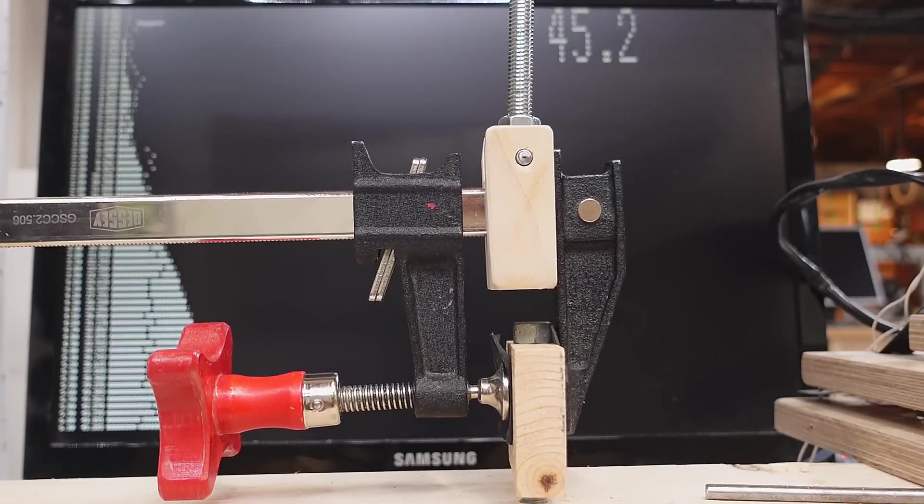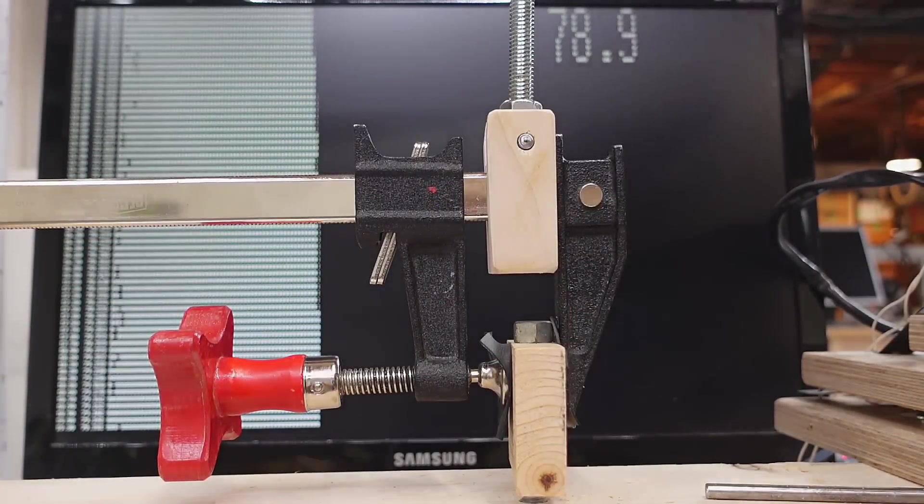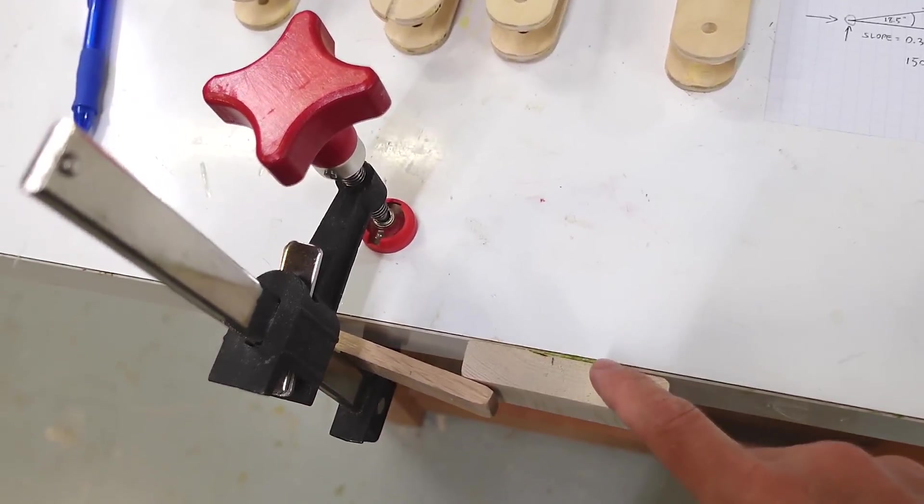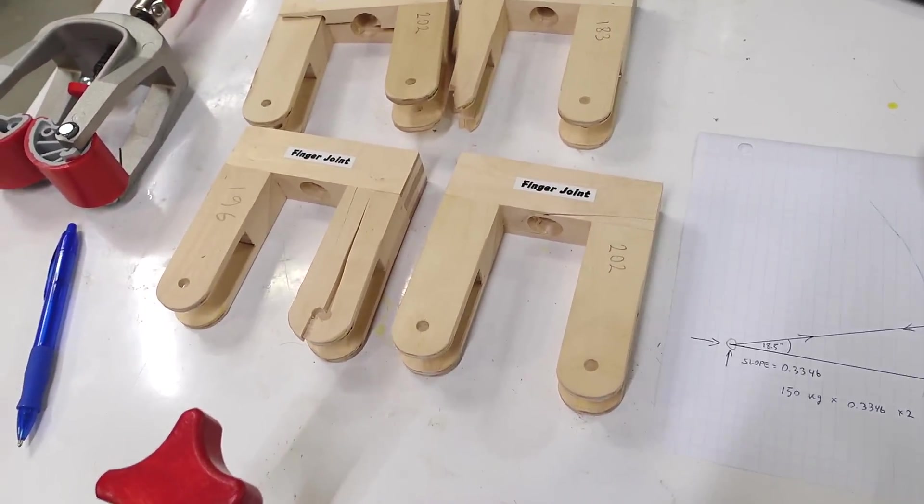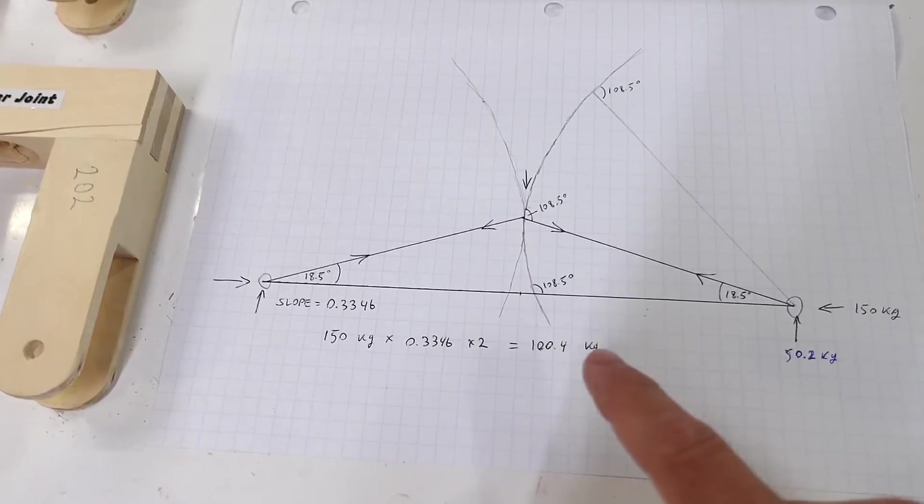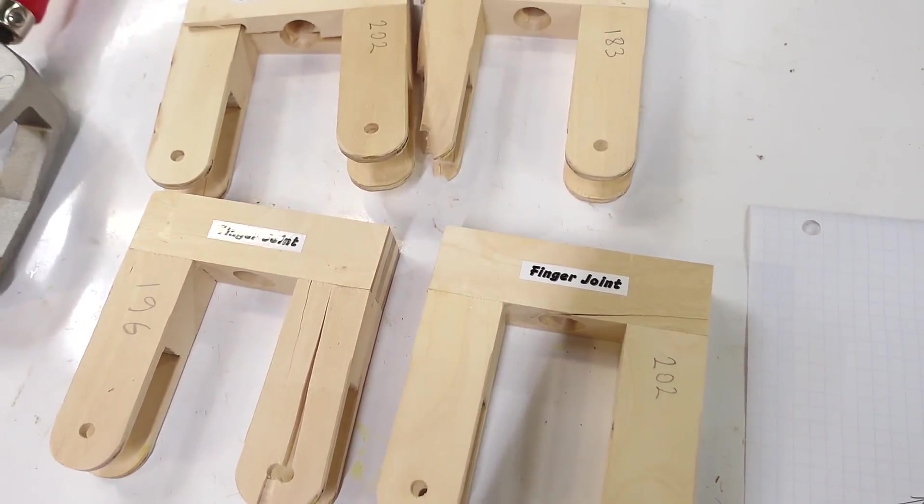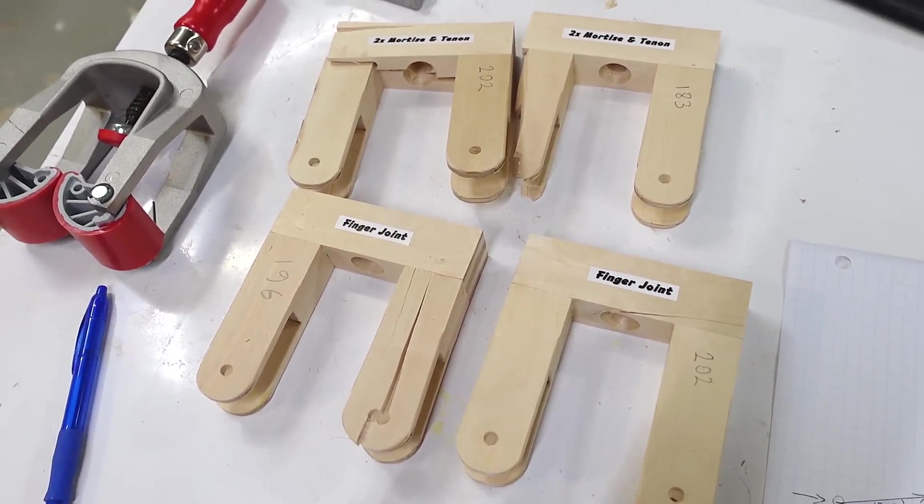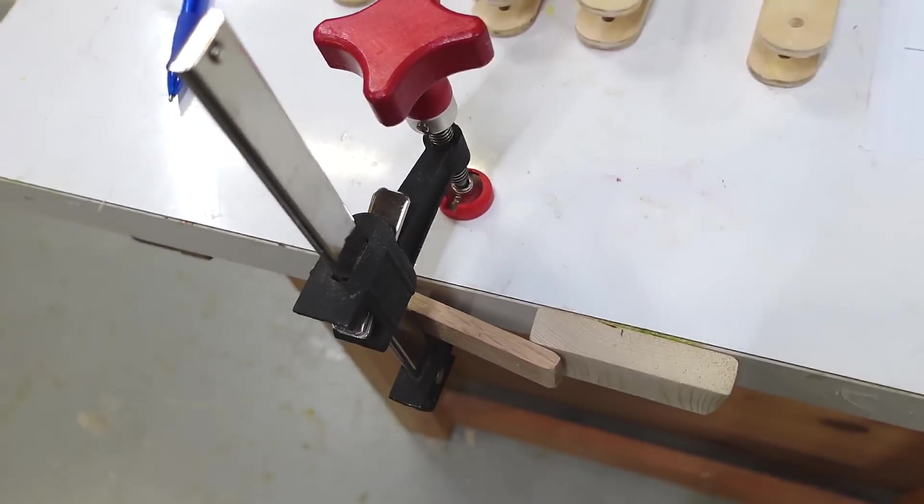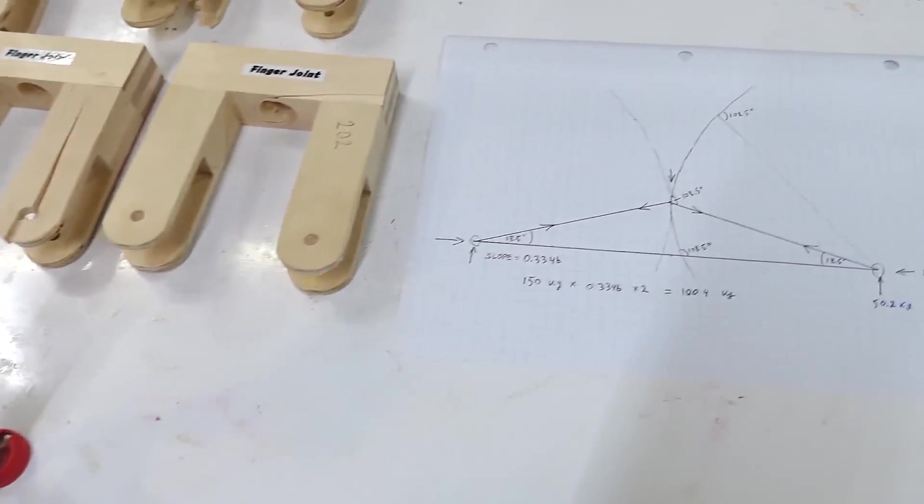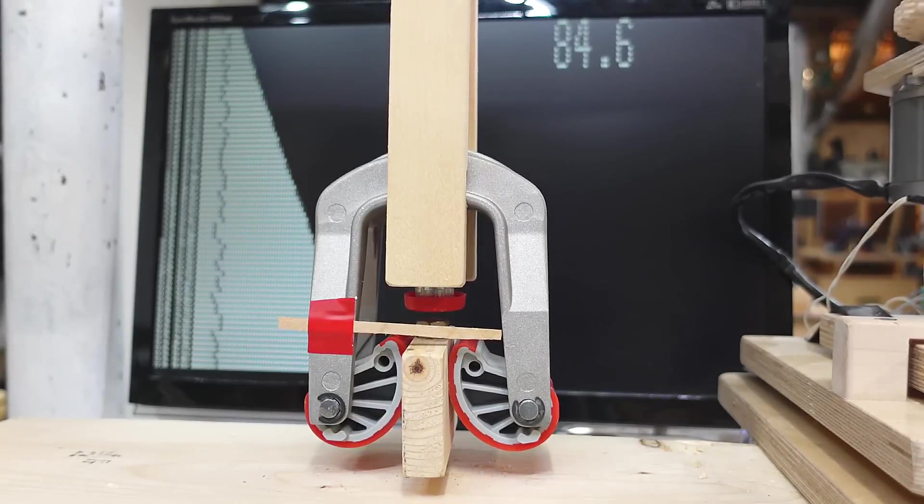And, my failure mode is the clamp kind of sliding out of these pads here. So, I replaced those plastic pads with a little bit of inner tube rubber but surprisingly that actually did worse. So, this edge clamp hack is good for perhaps 80 to 90 kilograms whereas with Marius' design I should be able to get 100 kilograms but that's leaving a small margin of safety less than a factor of 2.